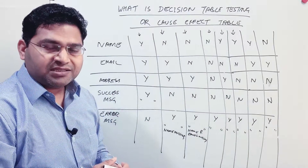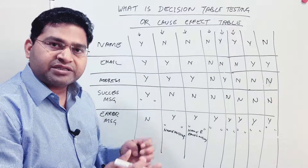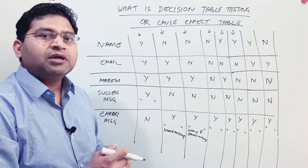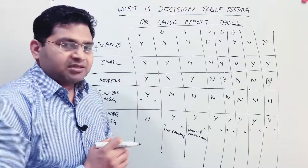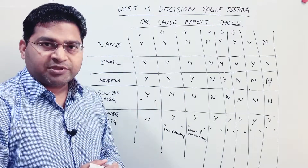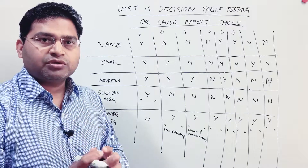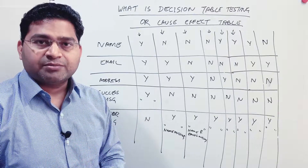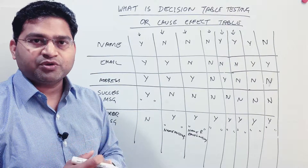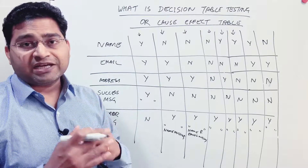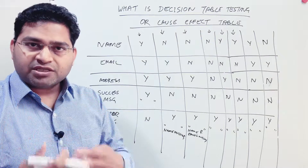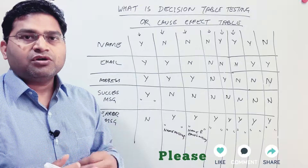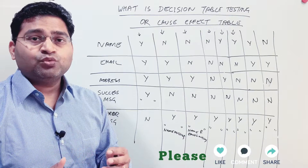This is the simplest way to understand decision table testing or cause-effect table testing. You can easily correlate this with other examples — try to think of other examples and look them up. Make sure you understand this concept well before you attempt an interview, as it will help you crack the interview. When you get into software testing, you will be applying these techniques to actually test software. That's all for this tutorial — hope it was helpful, thank you very much for watching.